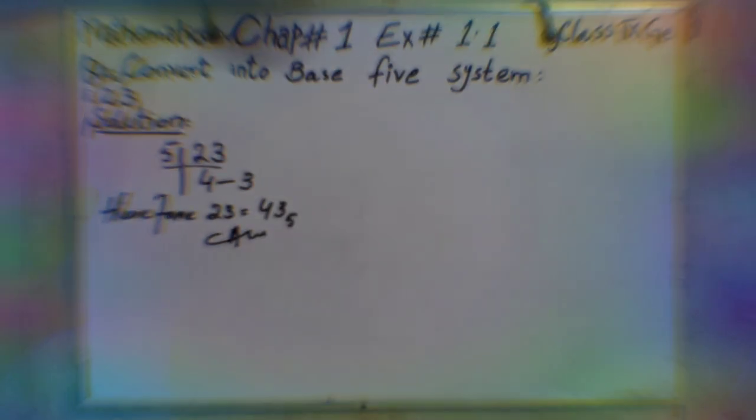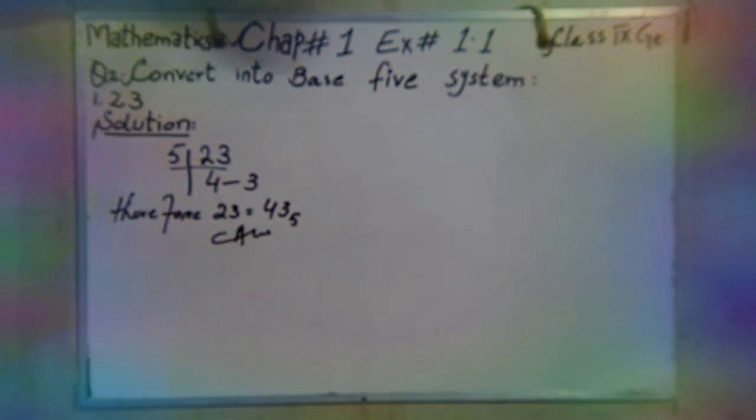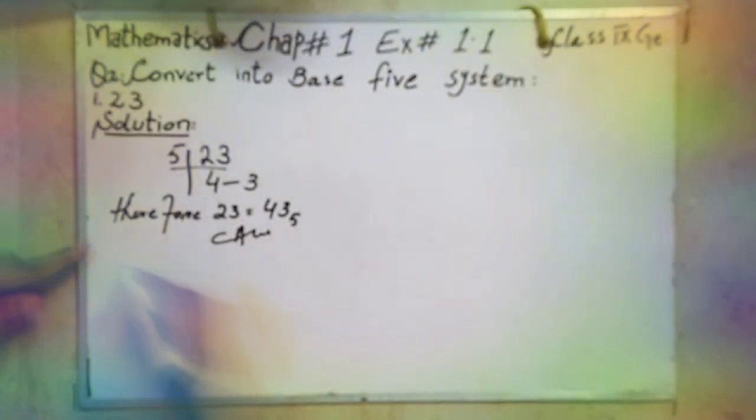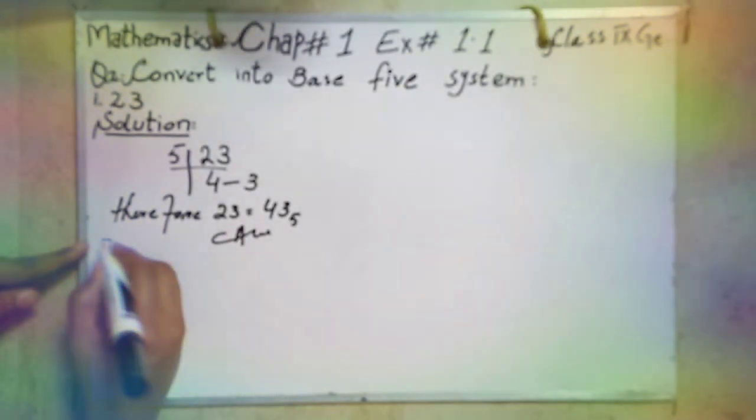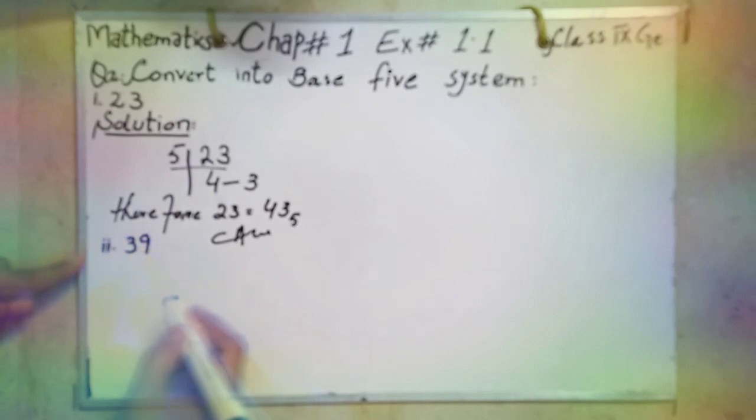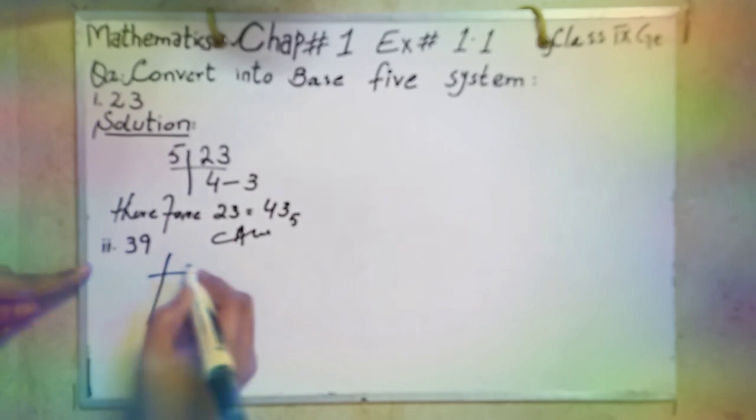Now the second part is 39. Apply same method. Second part 39, convert into Base 5 System.